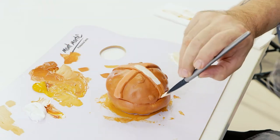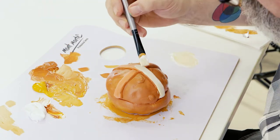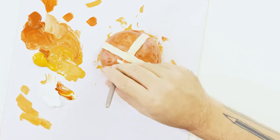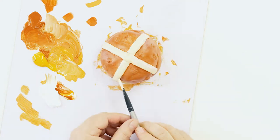For the cross we can use titanium white with a touch of yellow ochre to make a dirty white colour and carefully paint this over the cross.